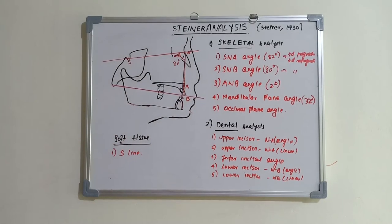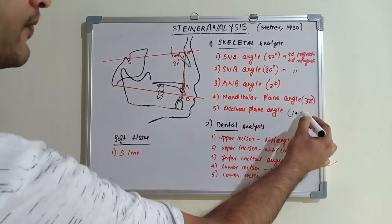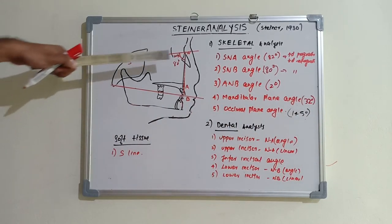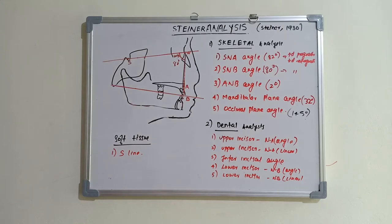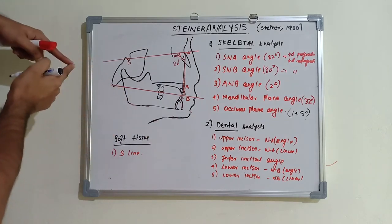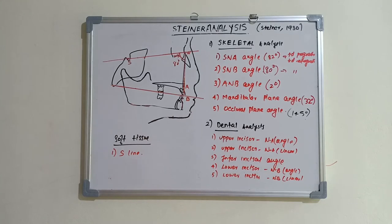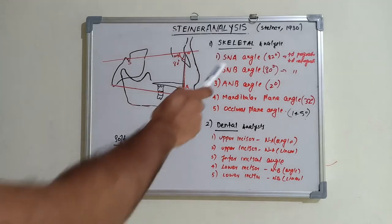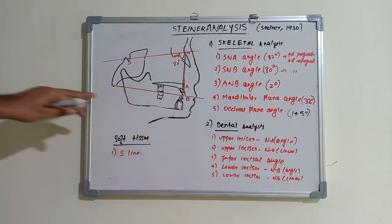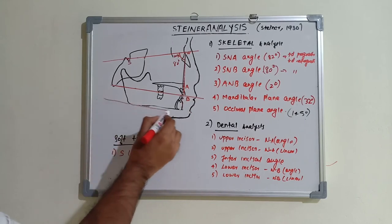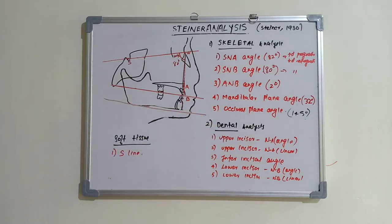The last skeletal parameter is the occlusal plane angle, with a mean value of 14.5 degrees. It is formed between the SN plane and the occlusal plane, indicating the relation of the occlusal plane to the cranium and face, and also indicating the growth pattern of an individual. That completes the five skeletal parameters: SNA, SNB, ANB, mandibular plane angle, and occlusal plane angle.